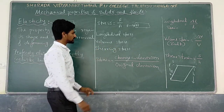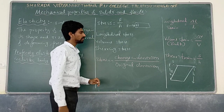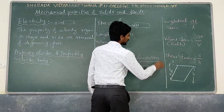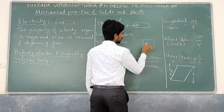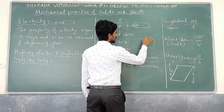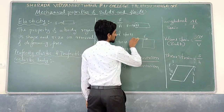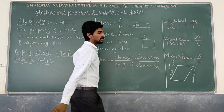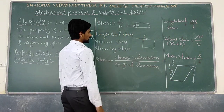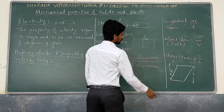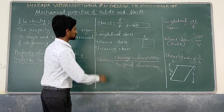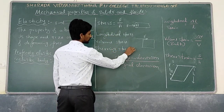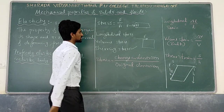For shearing stress, for example, there is a change in shape. When a tangential force is applied along a surface, the shape will change. In this case, volume will remain the same but shape is changed — that is called shearing stress. For volume stress, shape remains the same but volume changes.